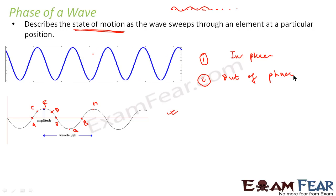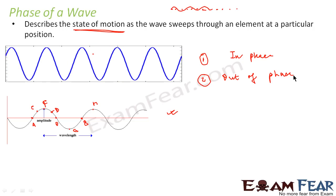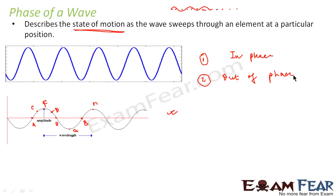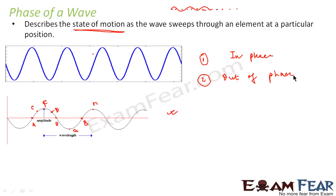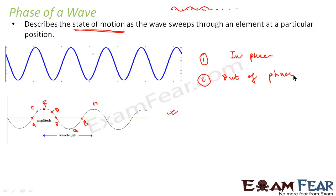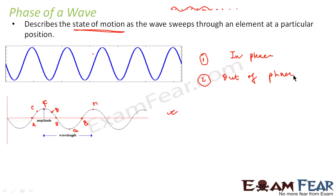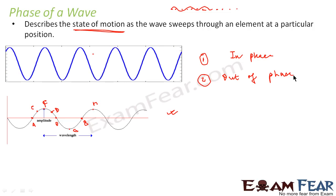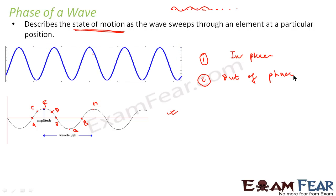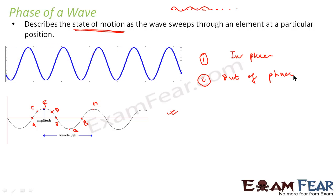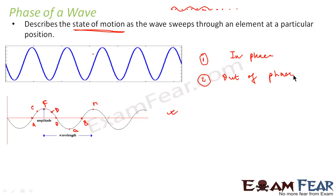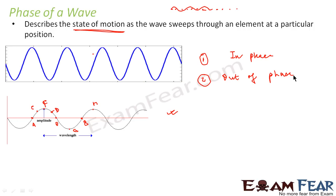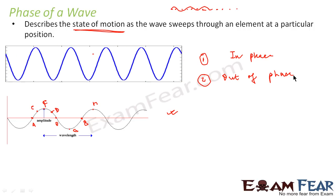So out of phase is opposite to what we mean by in phase. Two waves can be in phase, they can be completely out of phase, or they can be partially out of phase. When we talk about in phase and out of phase, it is not necessary that we can only compare different points on the same wave — we can also compare two waves and say that these two waves are in phase or out of phase with each other. Right now, to understand this, we will look at different points on the same wave.